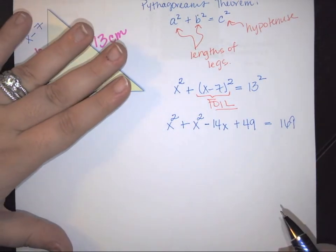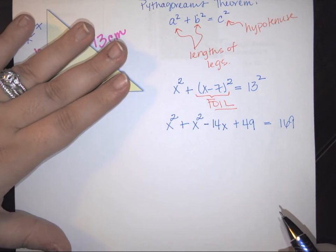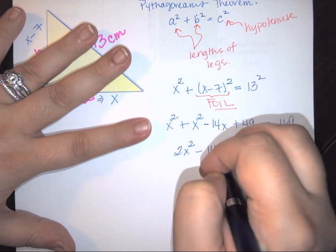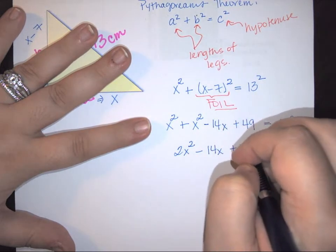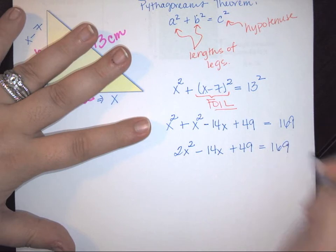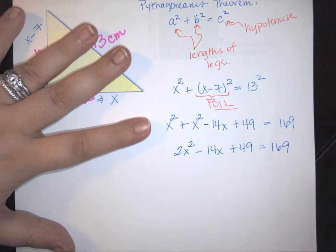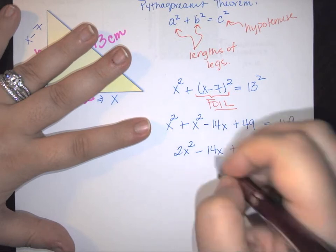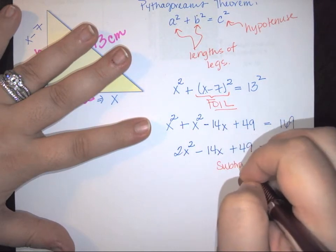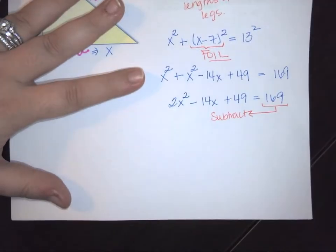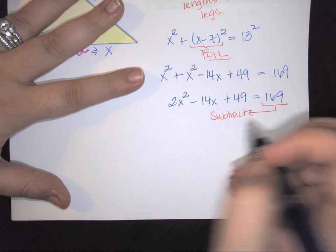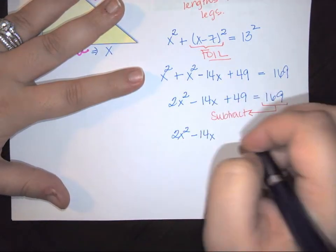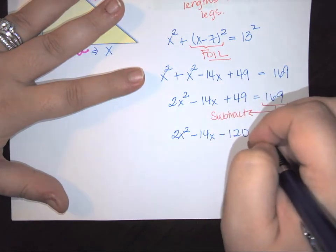Combine my like terms. And I have 2x squared minus 14x plus 49 equals 169. I then need to take this 169 here and I need to move it over. It is positive, so I have to move it through the use of subtraction.